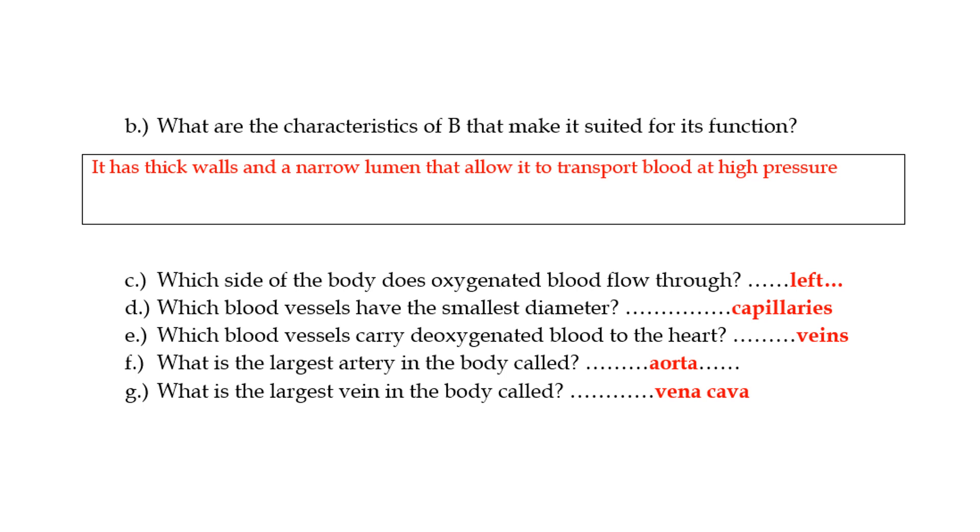Okay. What are the characteristics of B that make it suitable for its function? That would be the artery. First of all, it has very thick walls. If you look at that image again, you can rewind. It has very thick walls and it has a narrow lumen. If you want something to travel at high pressure, then you need to restrict the space, the diameter through which it is traveling, so that the pressure can be more. If the diameter is large, then there isn't going to be enough pressure exerted on whatever it is that you're trying to move.